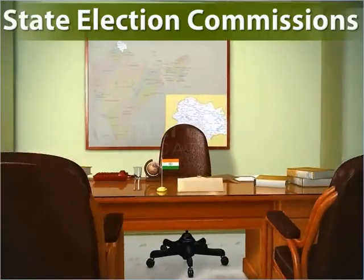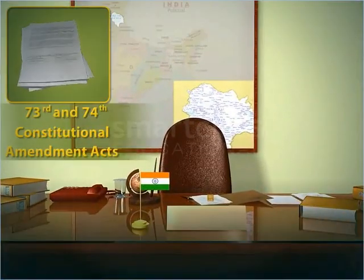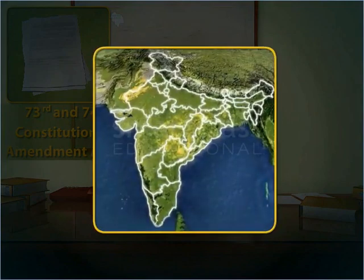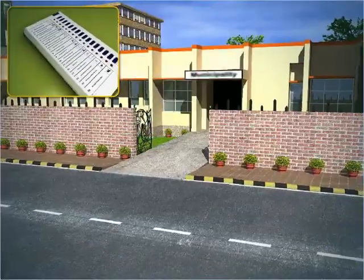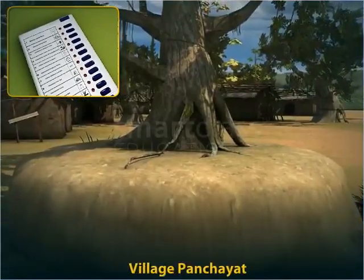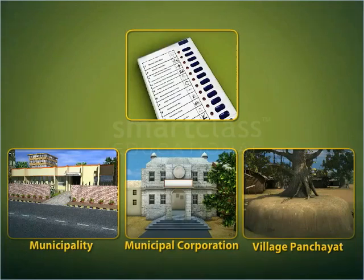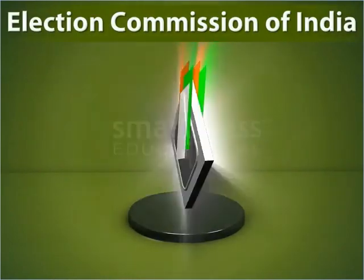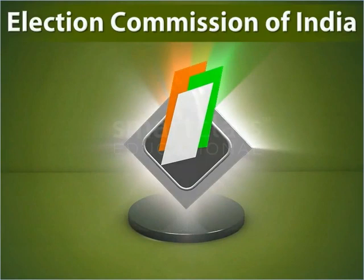The State Election Commissions were constituted under the 73rd and 74th Constitutional Amendment Acts. The State Election Commissions work independently in every state. According to these Acts, each state and union territory was entrusted with powers to conduct elections to municipality, municipal corporation, village panchayat and other local bodies. Thus, the Election Commission of India plays a pivotal role in conducting free and fair elections in India.